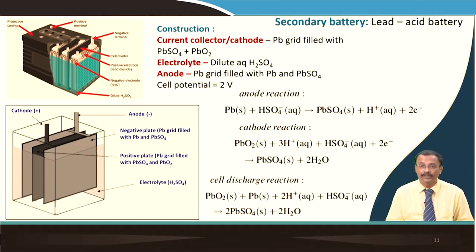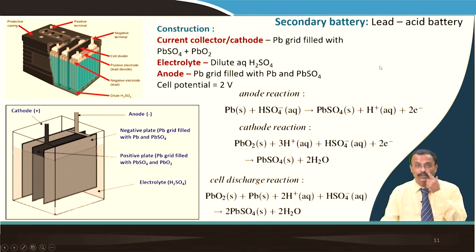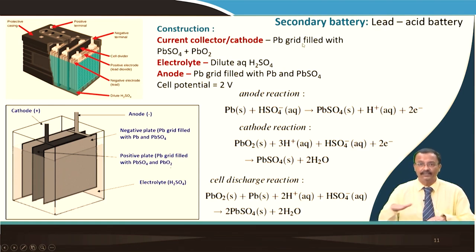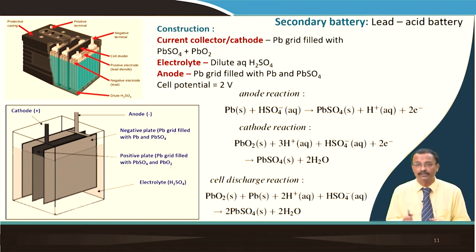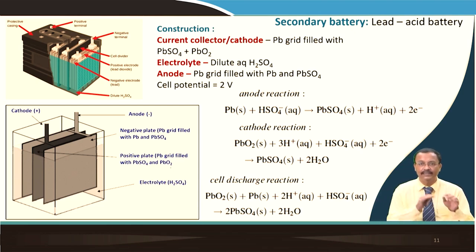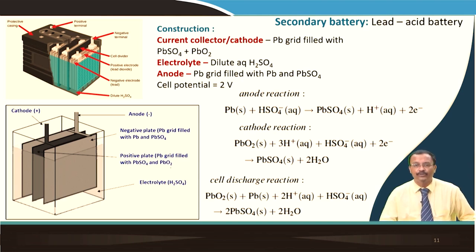Now we will talk about secondary batteries, where you can recharge after discharge, and lead acid battery is the forerunner. The current collector and cathode is a lead grid filled with lead sulfate and lead oxide. The electrolyte is dilute H₂SO₄ — one should be cautious about opening this battery due to possible acid burns. The anode is a lead grid filled with lead and lead sulfate. The cathodic reaction involves lead oxide being reduced to form lead sulfate.